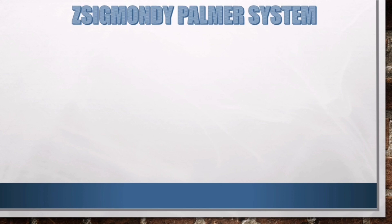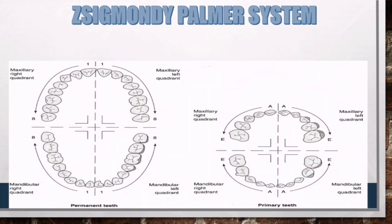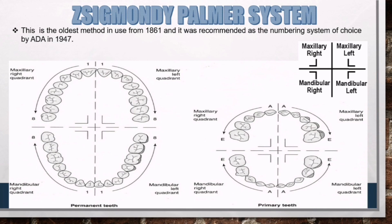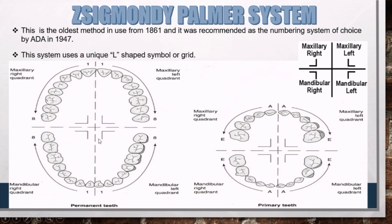Now let's know about the Sigmondi-Palmer system. This system is the oldest method in use, from 1861, and was recommended as the numbering system of choice by the American Dental Association in 1947. In the Palmer system, the mouth is divided into four sections called quadrants. The system uses a unique L-shaped symbol or grid. The counting always begins at the midline and progresses backward, with the symbol indicating the quadrant and the number indicating the position of the tooth from the midline.